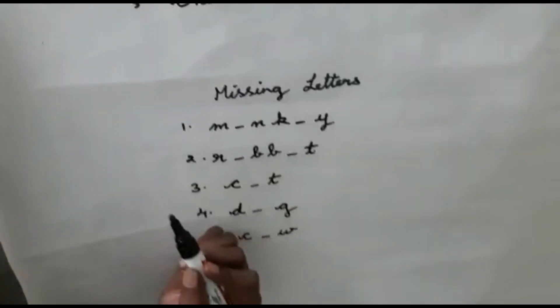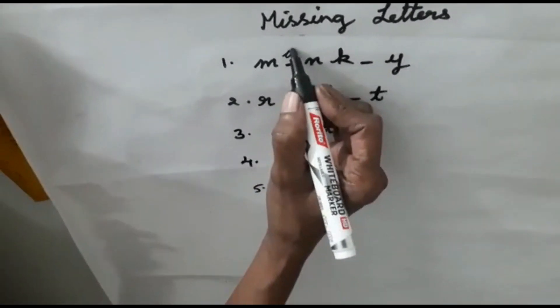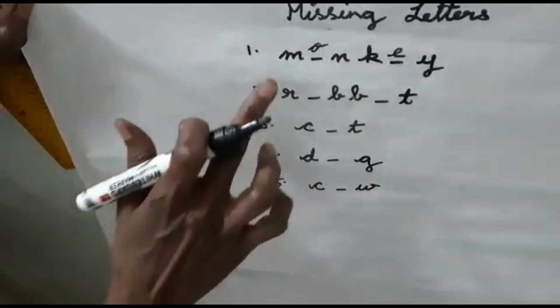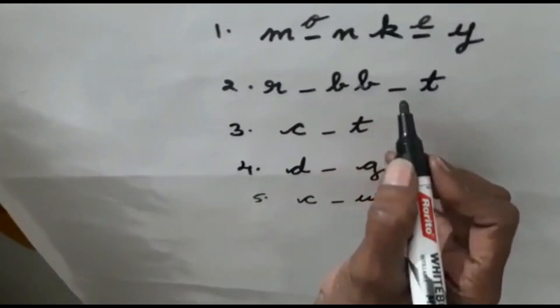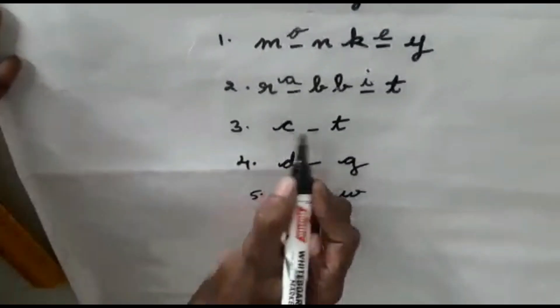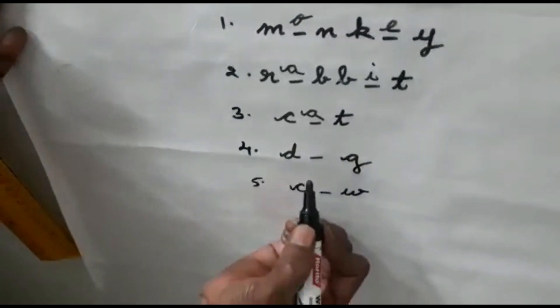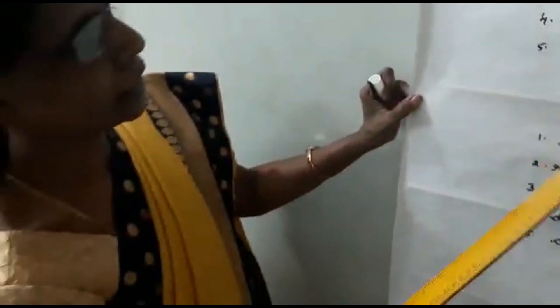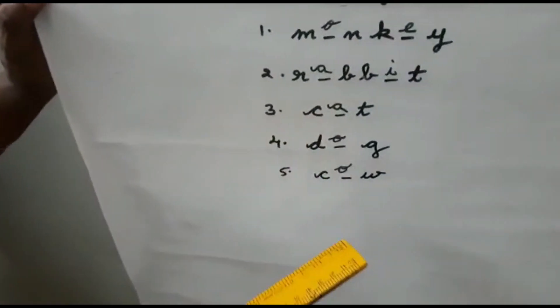Now we are going to see missing letters. Monkey — spelling: M-O-N-K-E-Y, monkey. Next: R-A-B-B-I-T, rabbit. Now cat: C-A-T, cat. What is the spelling of dog? D-O-G, dog. Then what is the spelling of cow? C-O-W, cow. So students, the animals are: monkey, rabbit, cat, dog, cow. Thank you students.